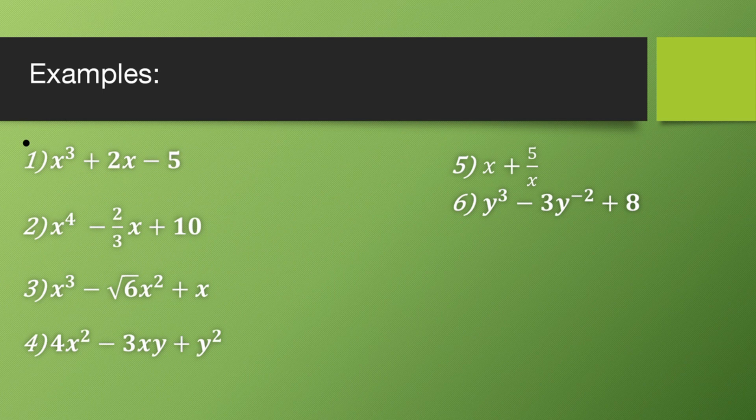Let's look at examples of polynomials. In example 1, the coefficients of x are real numbers — 2, -5, 1 — and the powers of x are positive, so it is a polynomial. In example 2, the coefficient is 2/3, which is a rational number and a subset of real numbers, and the power of x is positive, so it is also a polynomial.